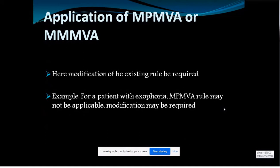In binocular vision prescribing, the standard rule of 'maximum plus for maximum visual acuity' cannot always be applied. For example, if the patient has exophoria, you should purposefully reduce the plus so that the patient does not need to put extra effort — pushing extra plus will work against the exophoria and increase the patient's strain. You can reduce the prescription accordingly before moving on to the minimum test battery.